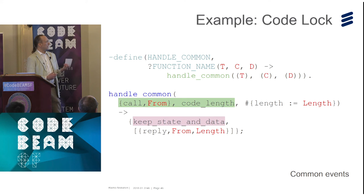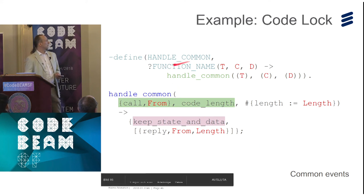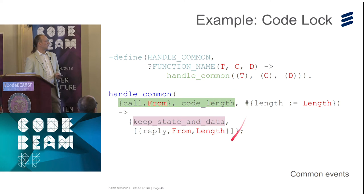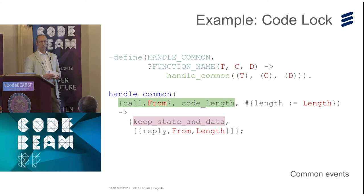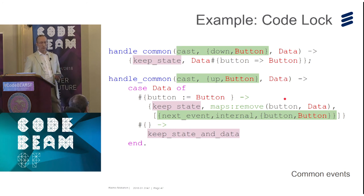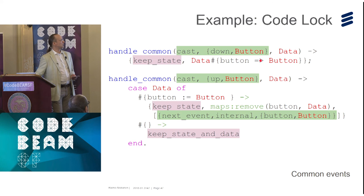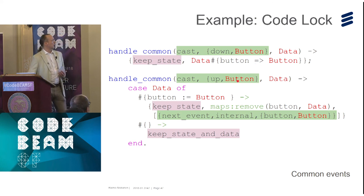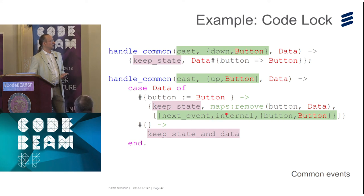Here are the common events. We define a macro, and the handle_common function for the code_length call simply replies and stays in the same state. Notice that this handle_common function does not need to know the current state because it only does state-unspecific things. For button_down, we store the button event in the map. For button_up, we compare if it was the same button pressed down, then insert the internal button event.